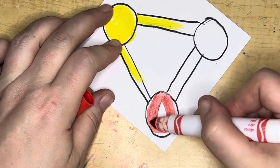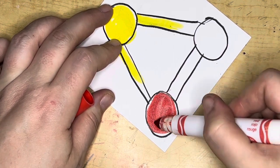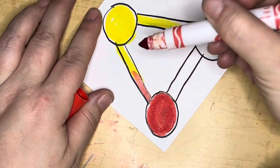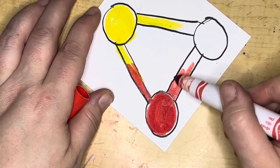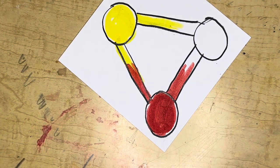Next, pour yourself some red fruit punch into your cup. And let the red fruit punch go partway down the straws in both directions.